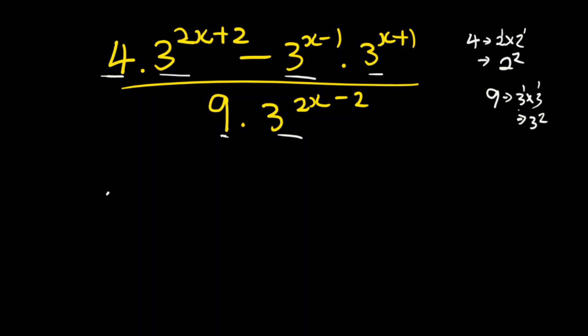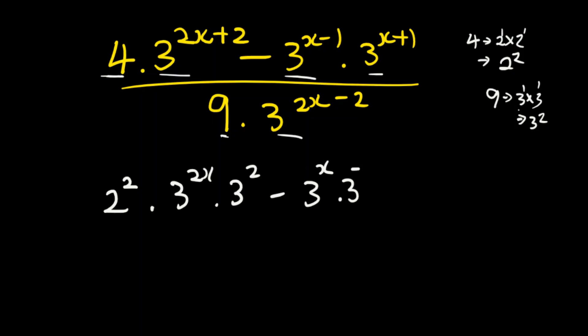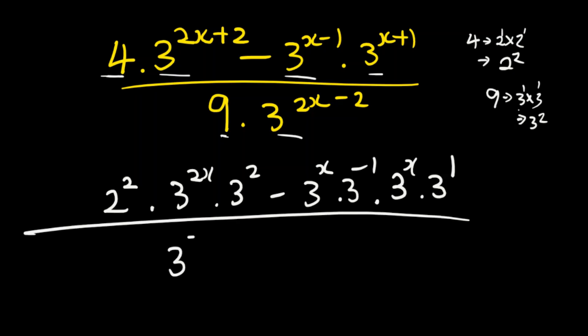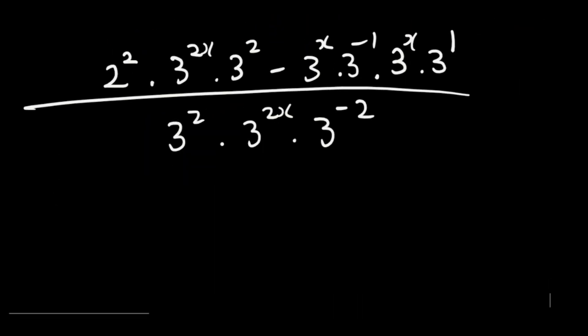So we have 2 to the power of 2 multiplied by 3 to the power of 2x, multiplied by 3 to the power of 2, minus 3 to the power of x multiplied by 3 to the power of minus 1, multiplied by 3 to the power of x multiplied by 3 to the power of 1, divided by 3 to the power of 2 multiplied by 3 to the power of 2x multiplied by 3 to the power of minus 2. Then check for like terms — bases with the same exponents.